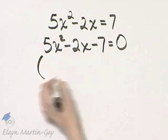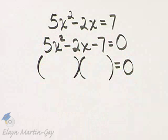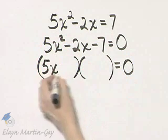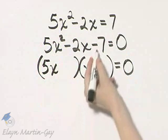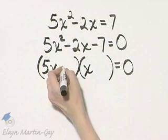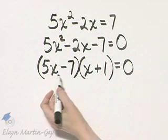If it factors, it will factor as two binomial factors. Factors of 5x squared, we'll use 5x and x. And then I'm looking for factors of negative 7. Let's try negative 7 and positive 1. I believe that will be it.